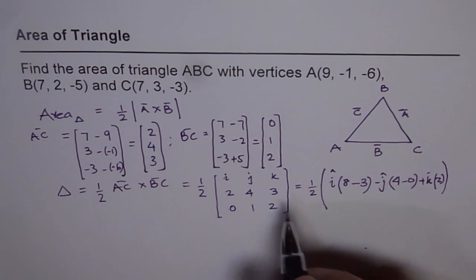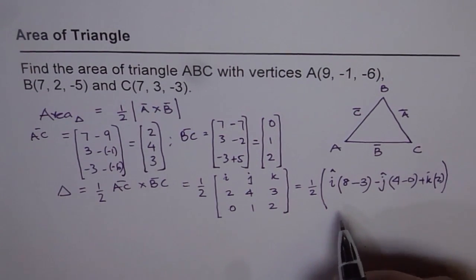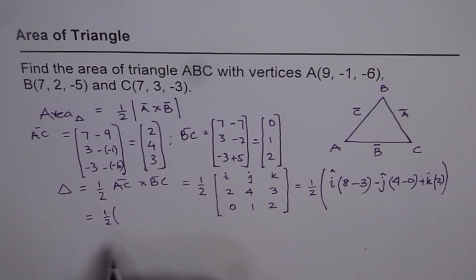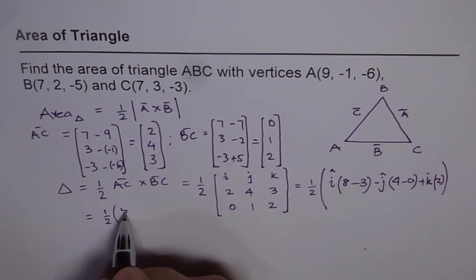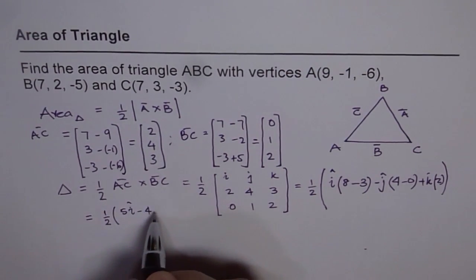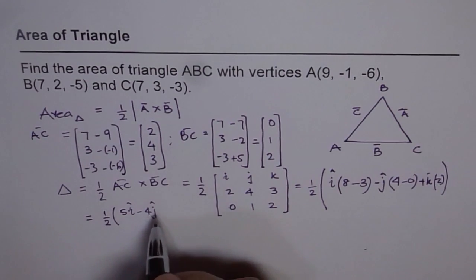So we get our cross product as equals to half of 5I minus 4J plus 2K.